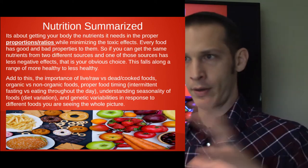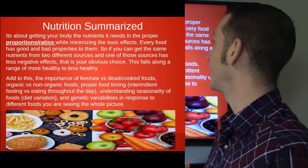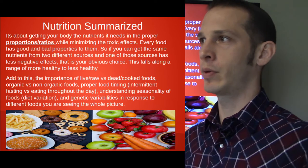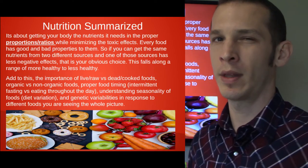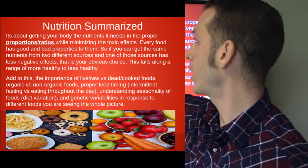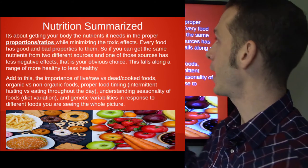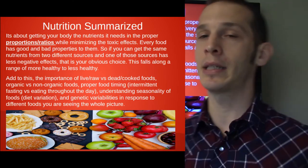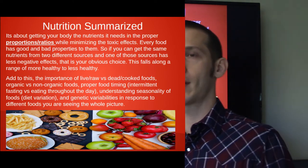Nutrition summarized: it's about giving your body the nutrients it needs in the proper proportions and ratios — carbs, proteins, fats. We don't want to be overdoing it on any one of them; we want a good balanced ratio. We'll talk about what those are and then go into Dr. Cousins' specific protocols, while minimizing the toxic effects. Every food has good and bad properties; if you can get the same nutrients from a source with less negative effects, that is your obvious choice. This falls along a range of more healthy to less healthy.